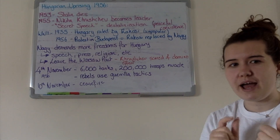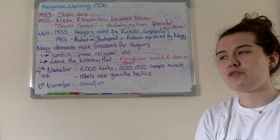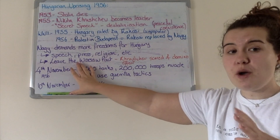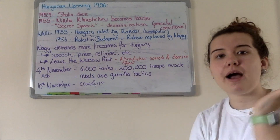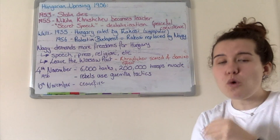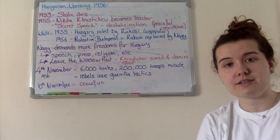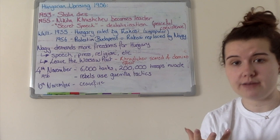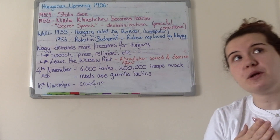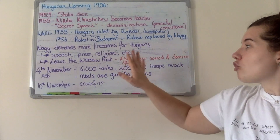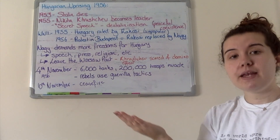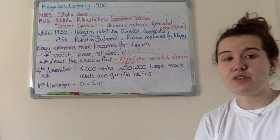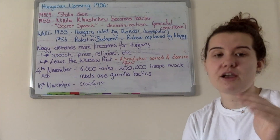Nagy is quite successful in gaining those freedoms, and Khrushchev is beginning to relent — until Khrushchev is shocked by the fact that Nagy says he wants to leave the Warsaw Pact. The Warsaw Pact was compulsory for all Soviet satellite states; there was no choice like there was in NATO. Every single satellite state — all eight — had to join. When Nagy says he doesn't want to be in it, Khrushchev flips out. He is scared of a domino effect: if he lets Hungary leave, it will inspire other satellite states to leave, leaving the Soviet Union vulnerable. He thinks Nagy is now taking the Michael.